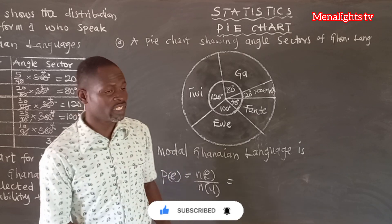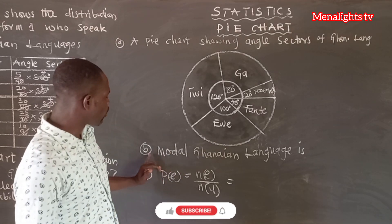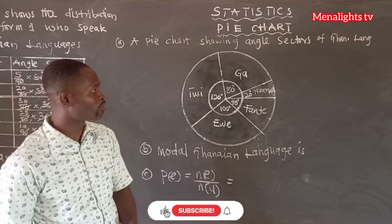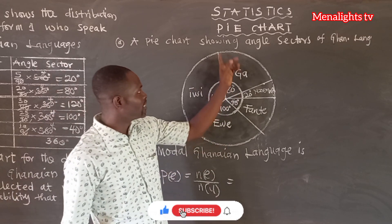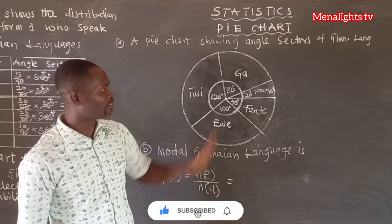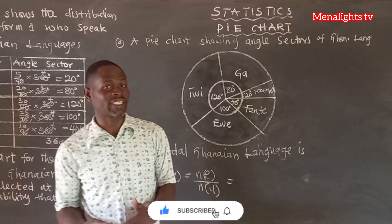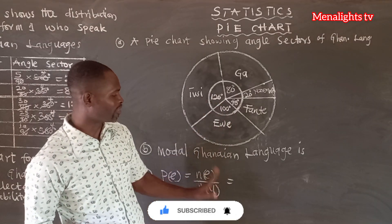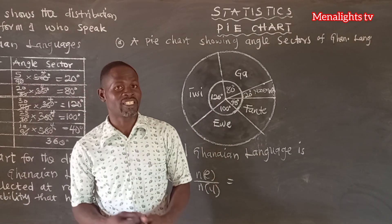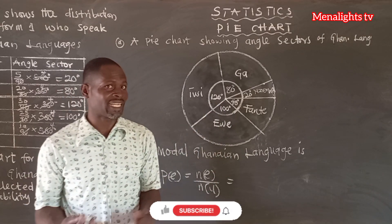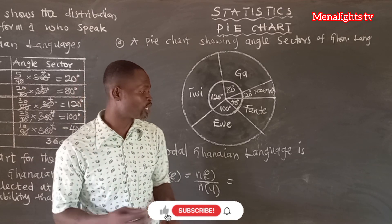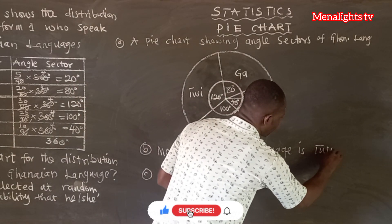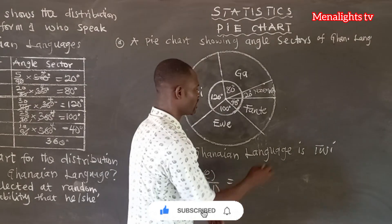Now we come to part B. Part B asks: what is the modal Ghanaian language? The modal Ghanaian language is the language that has the most sectors or the biggest sector. That is Twi, because Twi has the biggest sector of 120 degrees. So the modal Ghanaian language is Twi — that is the language that most students speak.